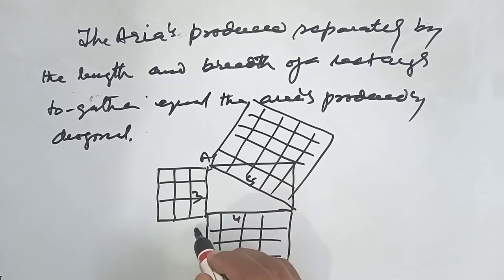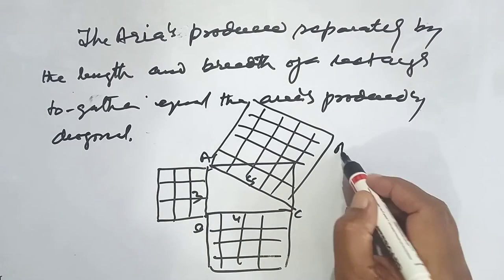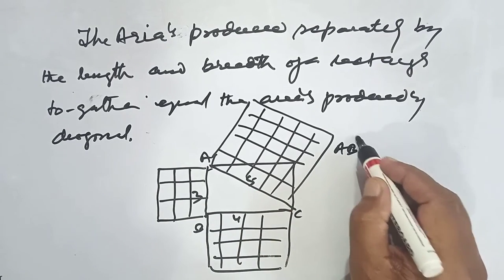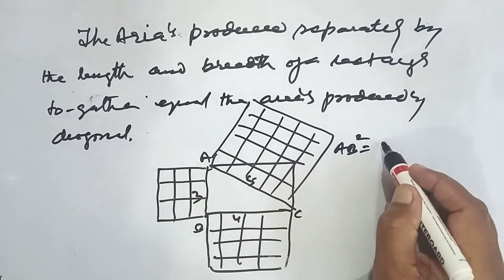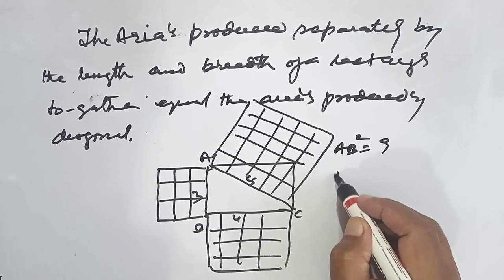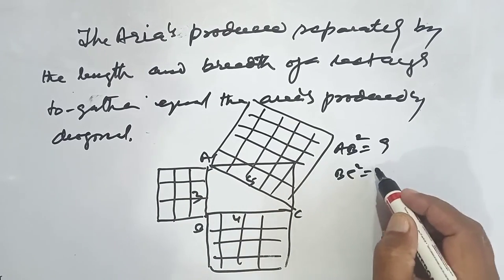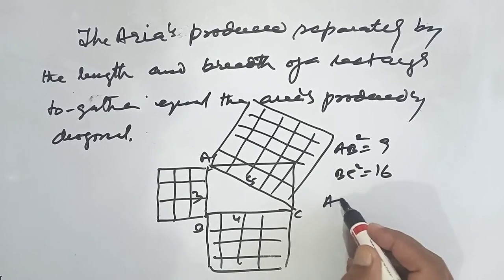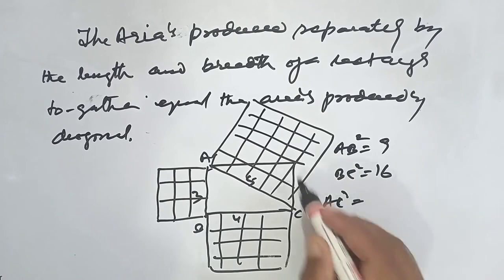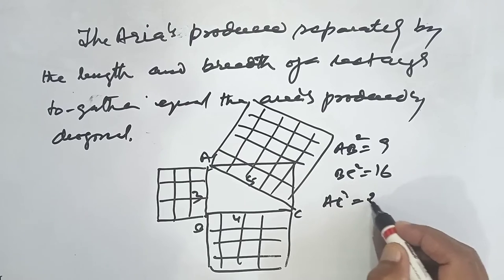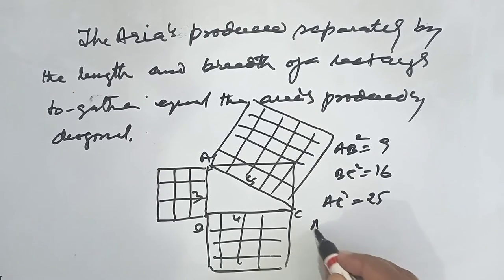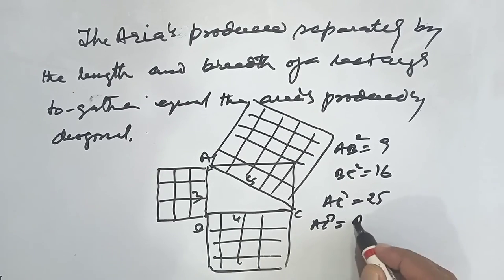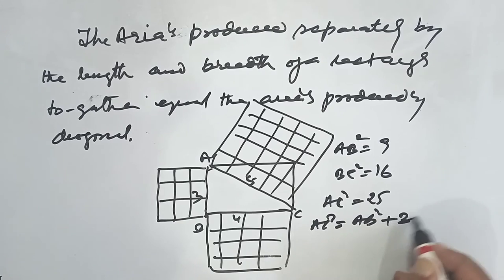So here, AB square is equal to 9, BC square is equal to 16, and AC square is equal to 25. So we see that AC square is equal to AB square plus BC square.